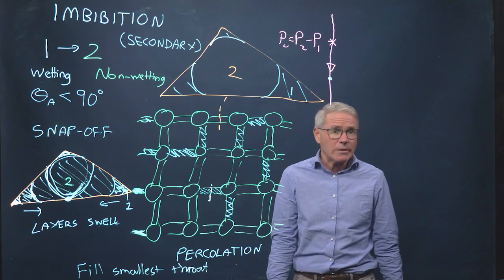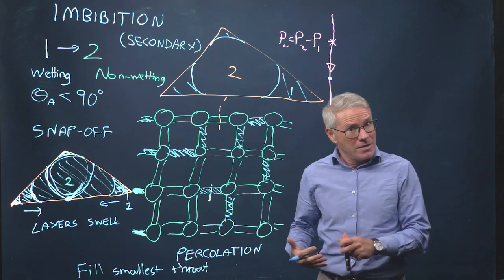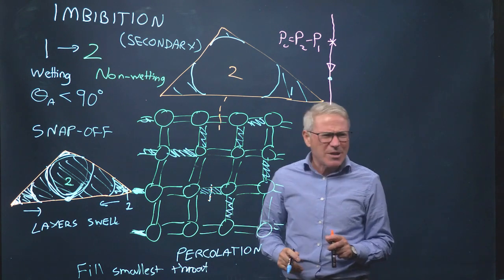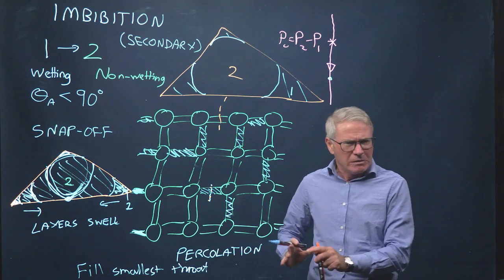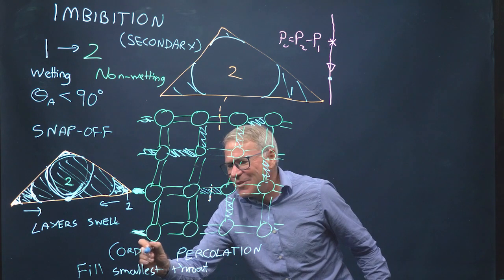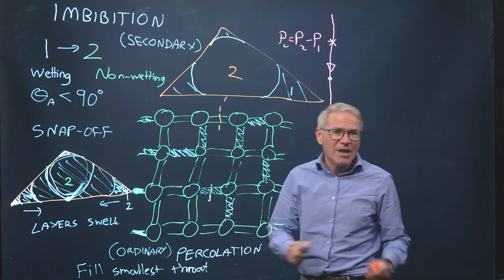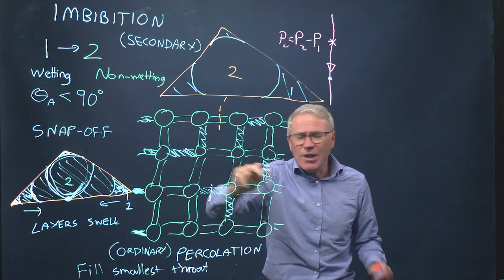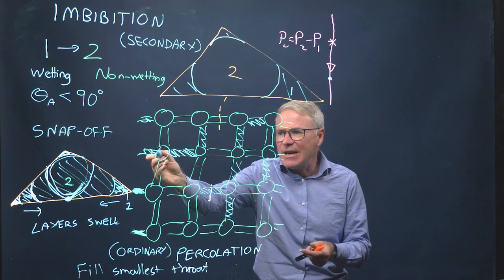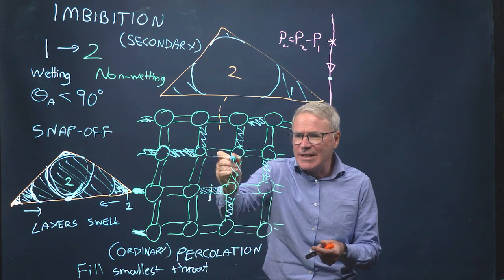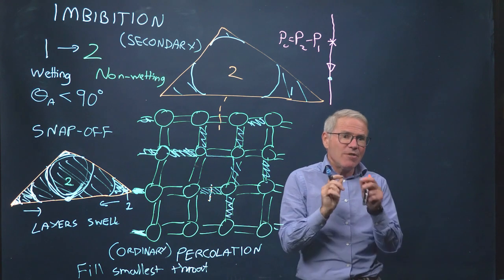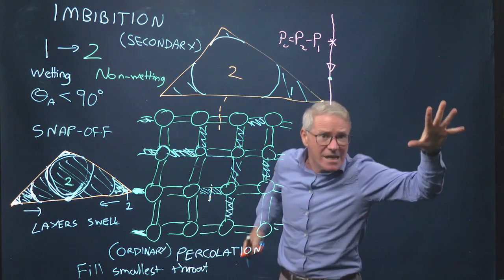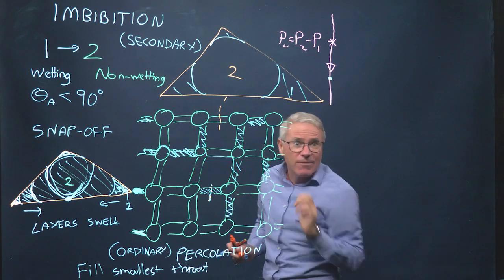It's a percolation process. If you want to qualify it, it's ordinary percolation. The reason why it's ordinary percolation is I can fill anywhere in the pore space, because the water is connected through the wetting layers. I can fill here at random because the water goes all the way from the inlet through the wetting layers and fills here. That's different from invasion percolation in primary drainage where the non-wetting phase has to be connected to the inlet — you can't get gas or oil to suddenly appear in the middle of the pore space. That would be magic. This is flow through the wetting layers.